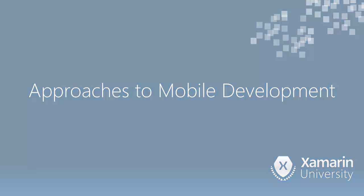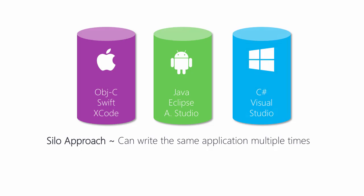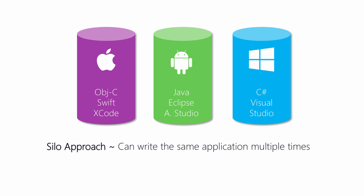We're going to look at three different developer approaches quite quickly. The first is the silo approach. The silo approach is quite common, particularly for larger organizations. This is where we write the same application three times, once per platform that we want to target.